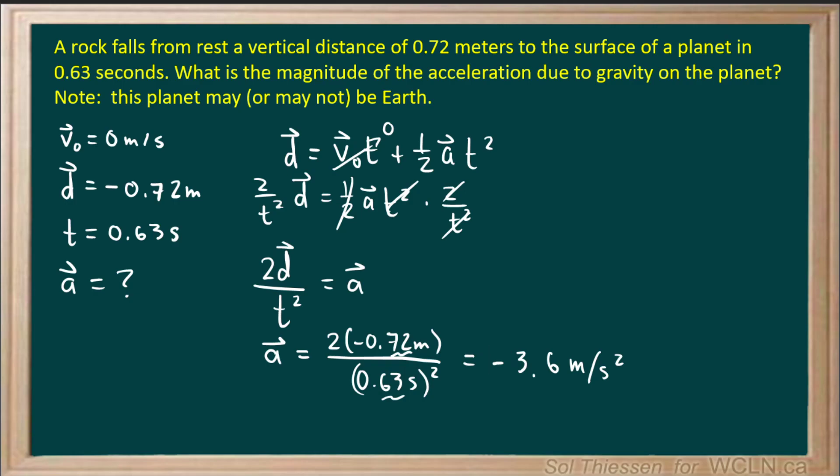So this negative indicates the downwards direction. If we take the magnitude of this number, we'll end up with 3.6 meters per second squared. So the magnitude of the acceleration due to gravity is 3.6 meters per second squared.